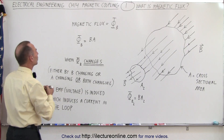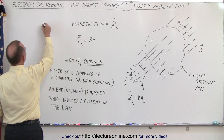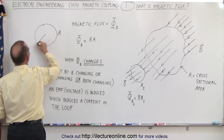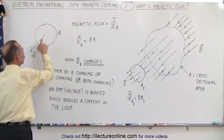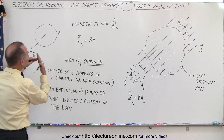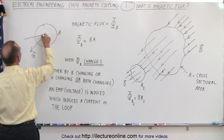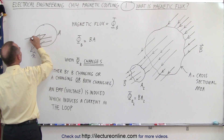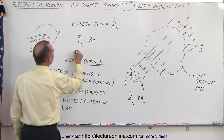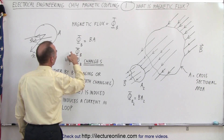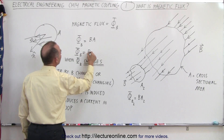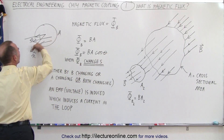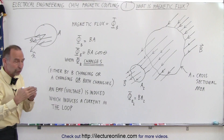What if we have a loop of area A and the B field comes in at an angle? This here represents the normal vector — the normal unit vector perpendicular to the area. If the B field comes in at an angle with that normal, let's call it theta, then the magnetic flux is equal to B times A times the cosine of the angle between the perpendicular to the loop — the normal to the area — and the direction of the B field.